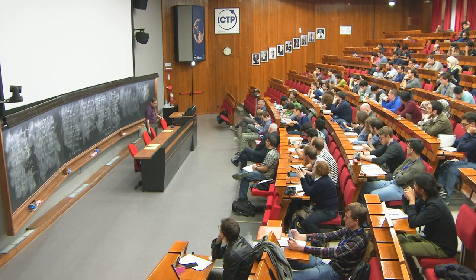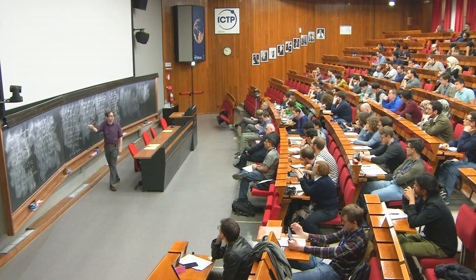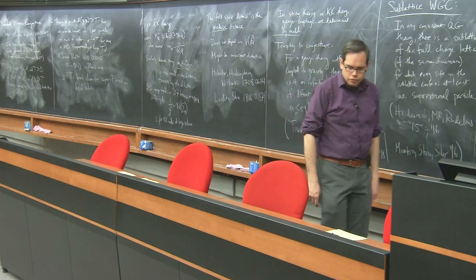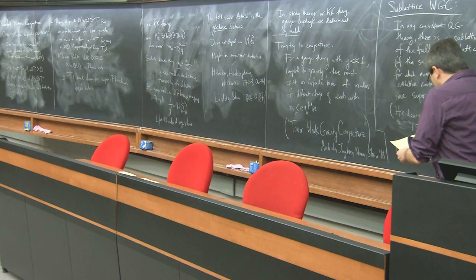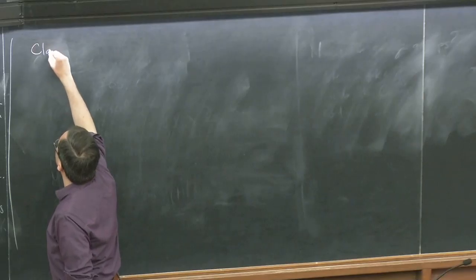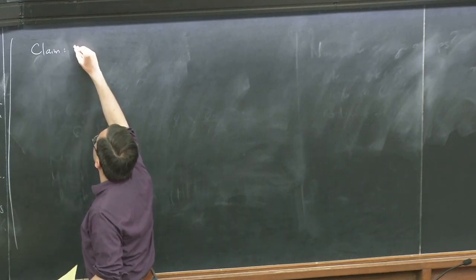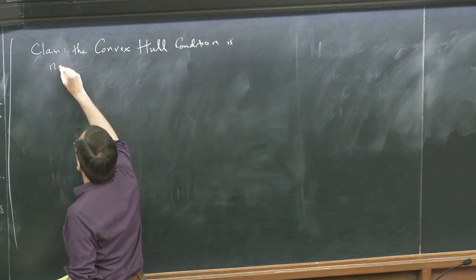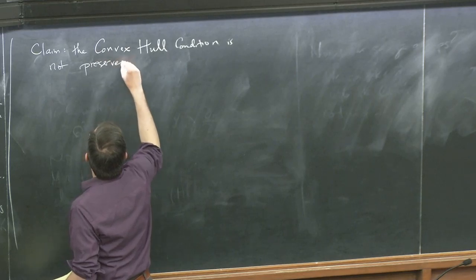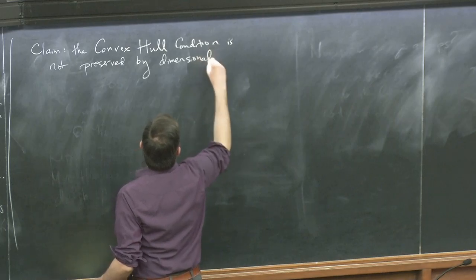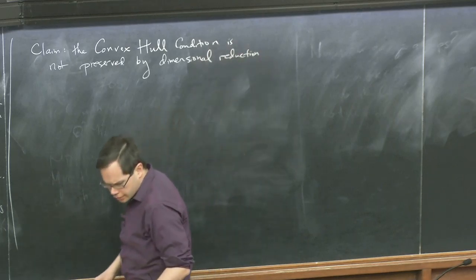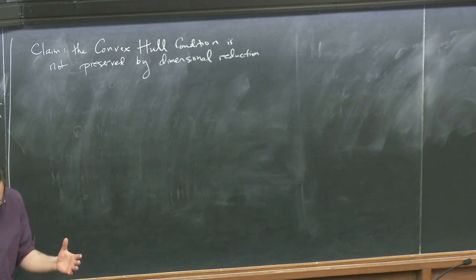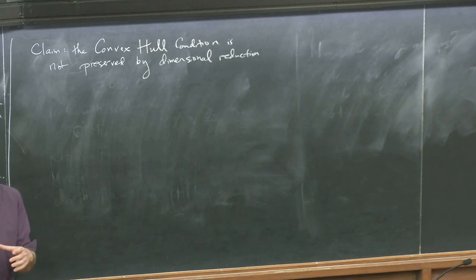We were led to guess this not by the logic starting from the Swampland Distance Conjecture, but rather just by thinking about the Weak Gravity Conjecture itself and trying to stress-test it for consistency. The claim we made in the 2015 paper is that there's a flaw in the convex hull condition — the minimal version of the Weak Gravity Conjecture — which is that I could give you a theory that satisfies it, and you could compactify that theory on a circle and get a new theory that doesn't satisfy it anymore.